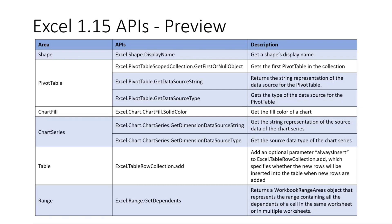We're also expanding the work that was done with range to add in the Get Dependents API. So now from a single cell, you can see what other cells it affects. This is all really building out those scenarios around transferring data from a web service and getting it back into the source of the workbook and back and forth there.